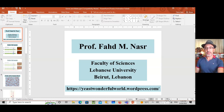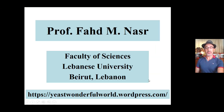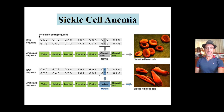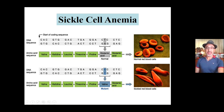I'm Professor Fahad Nasr from the Lebanese University in Beirut. Today we are focusing on the concept of genes and alleles. I will use as a model sickle cell anemia, which is caused by a mutated version of the gene coding for the beta-globin of hemoglobin — the red pigment of red blood cells responsible for carrying oxygen throughout the body. On the top you have the normal allele, HbA, and on the bottom you have the mutant, or abnormal allele, HbS. They differ by a point mutation.